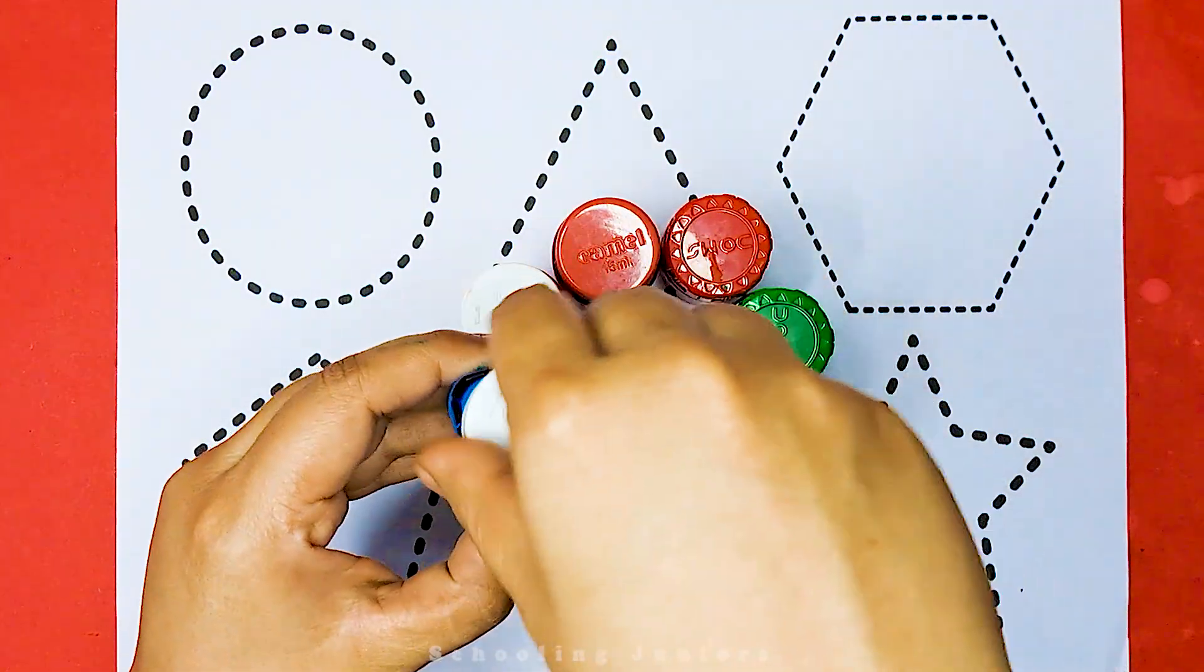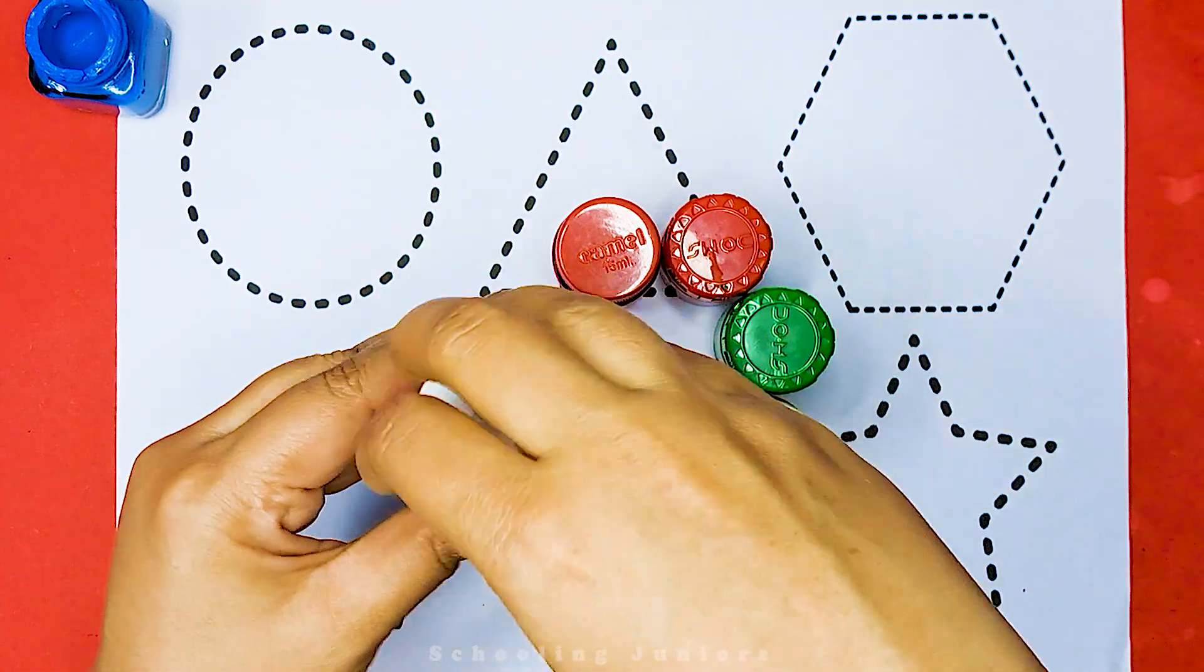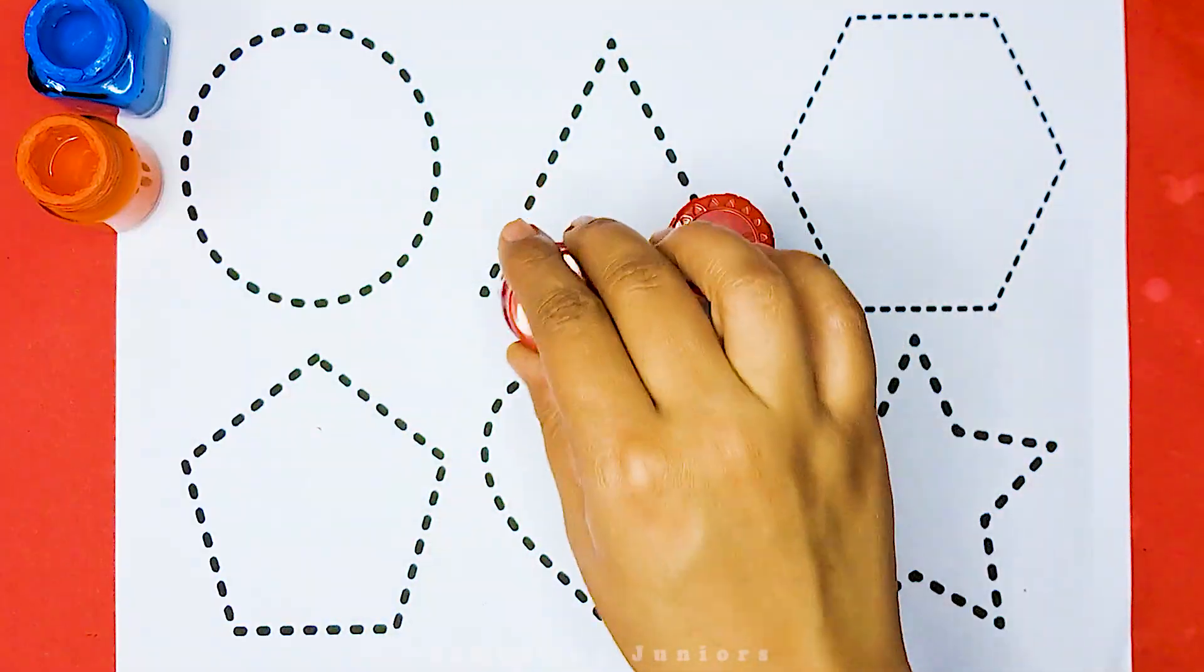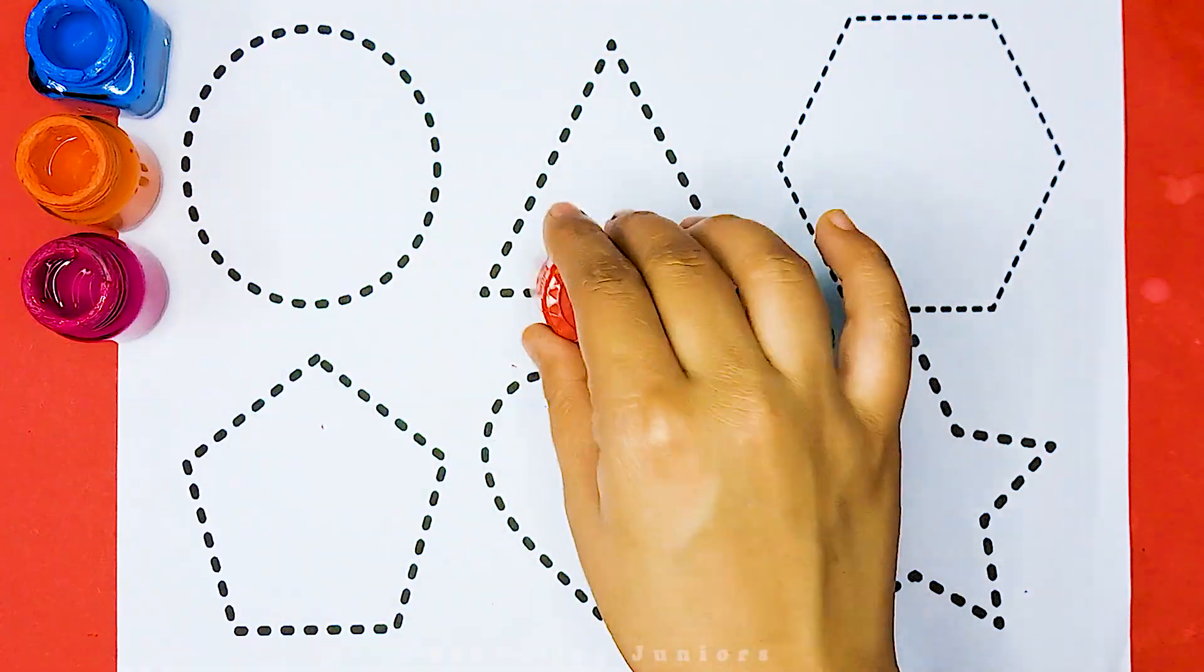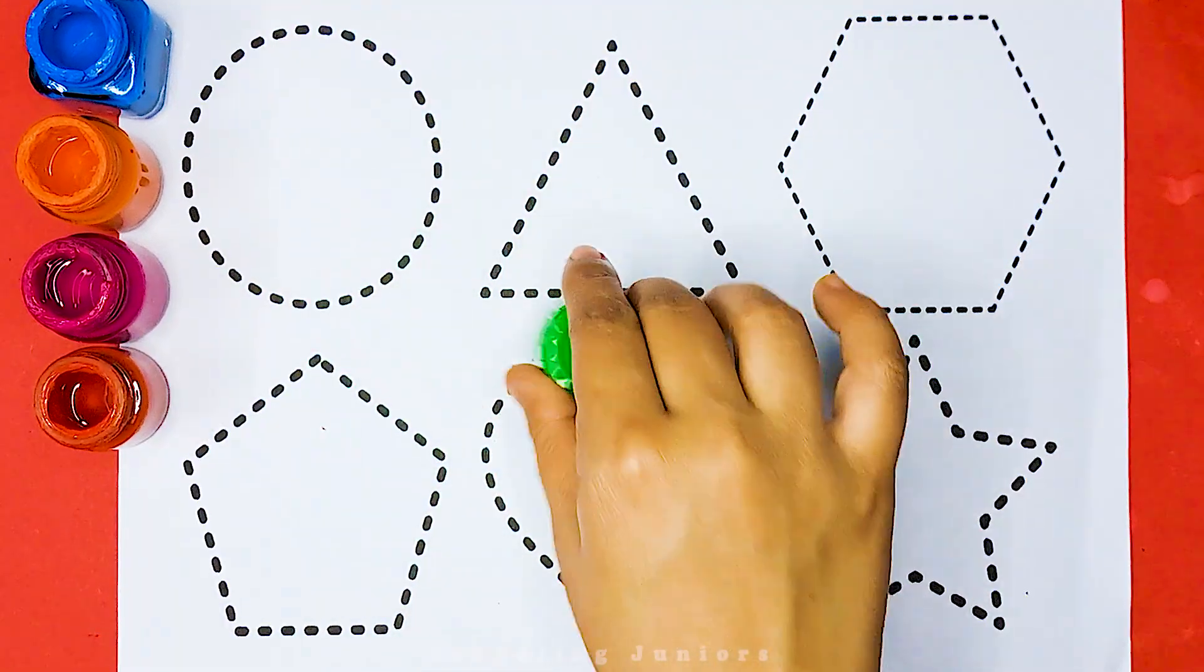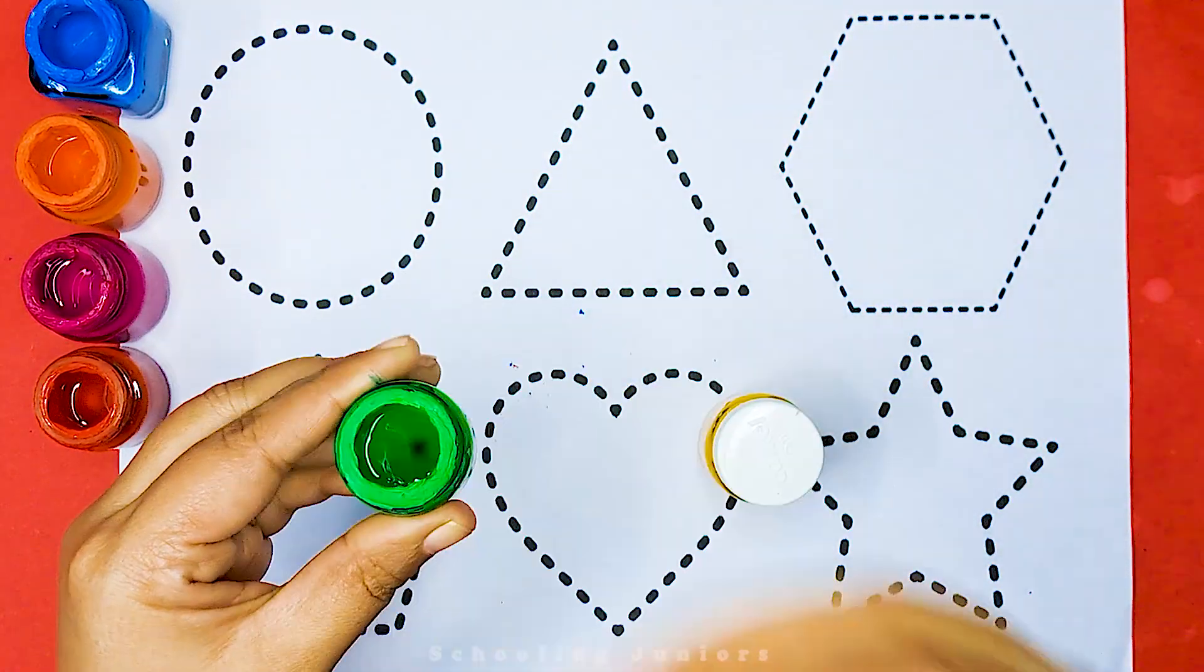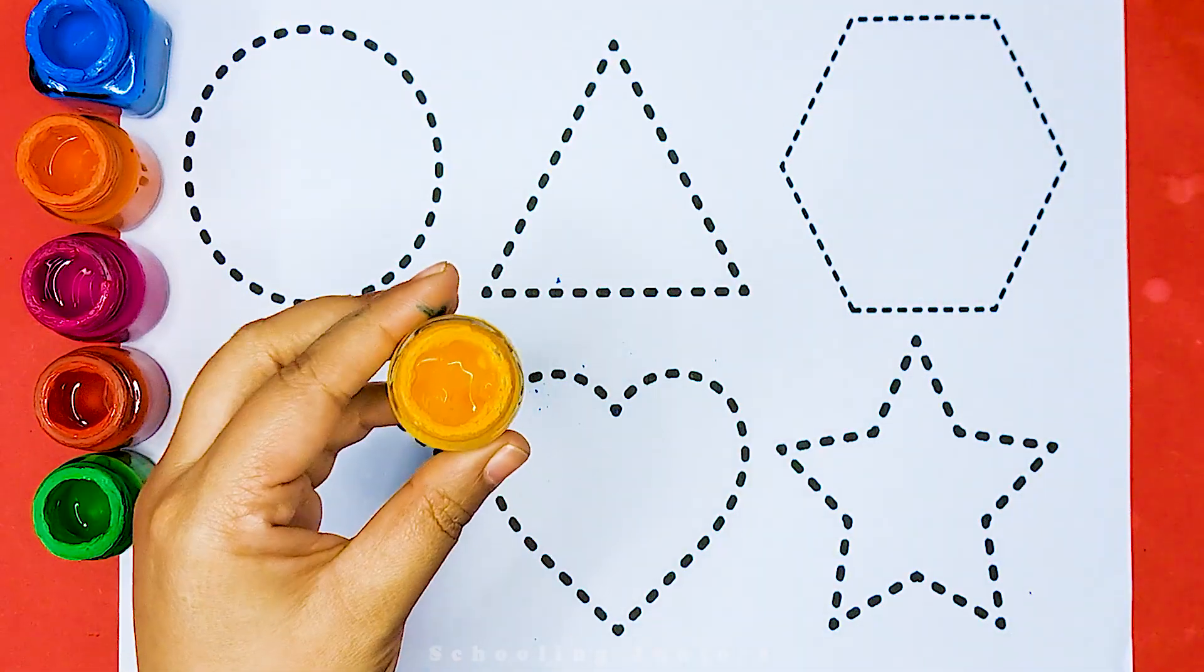This is blue color. This is orange color. This is pink color. This is red color. This is green color. This is yellow color.